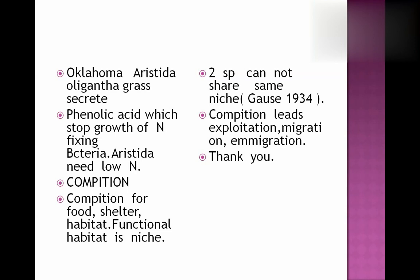Now comes competition. Competition is a type of relationship in which Species A competes with Species B and both are harmful for each other. They compete for food, shelter, and habitat. The functional niche in which one species lives stops the growth of another species — two species cannot share the same niche. This principle was given by Gauss in 1934. Competition leads to exploitation, migration, and immigration. Thank you.